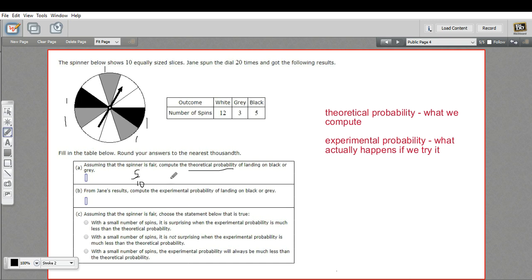If we convert that to a decimal, we've got 0.5. And they want this to the nearest thousandth, so I'm going to put some extra zeros there. So 0.500, that is the probability of landing on gray or black, at least the theoretical probability.